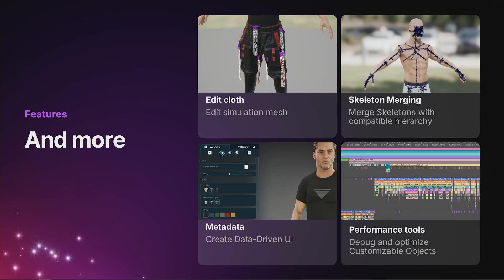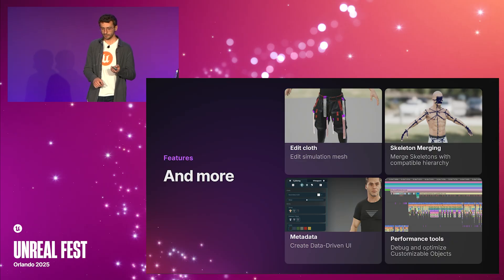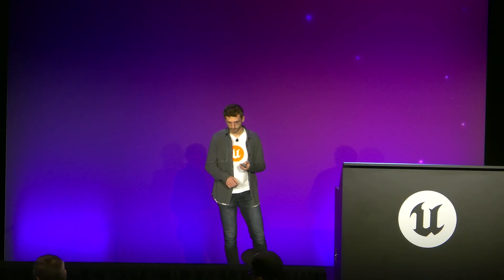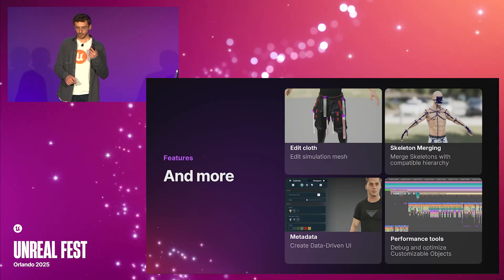But that's not all. With Mutable, you can also edit the physical simulation meshes of clothing, merge skeletons — with the caveat that they must have the same root hierarchy — and add metadata to the graph to create automatically generated data-driven UIs. Finally, Mutable also has performance tools to debug and optimize your customizable objects.